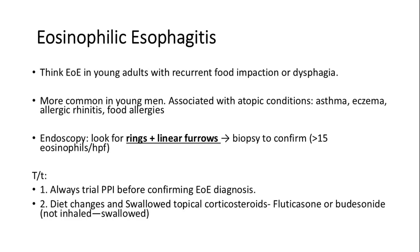Eosinophilic esophagitis is a condition often seen in young adults with symptoms like food impaction or dysphagia. It's commonly associated with atopic conditions such as asthma and eczema. Diagnosis involves endoscopy to identify rings and linear furrows, followed by biopsy which might show more than 15 eosinophils per field. Treatment includes a trial of PPIs first, dietary changes, and medical management with oral corticosteroids like budesonide pills.